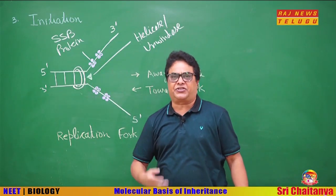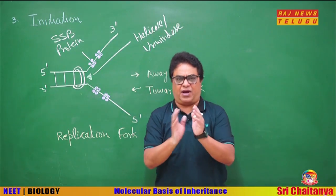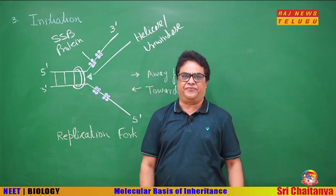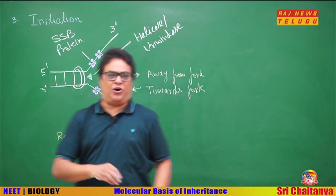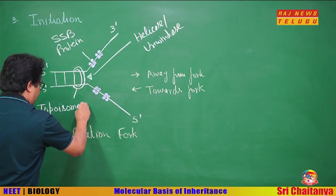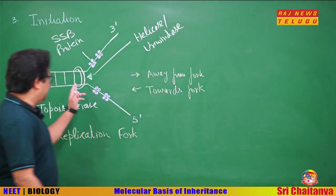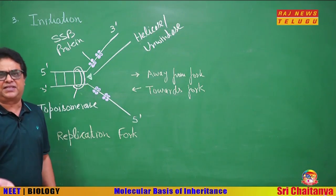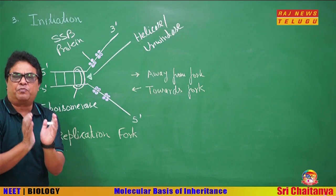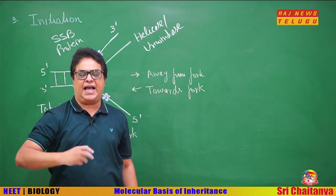This uncoiling of DNA in a small area creates a super-helix coiling tension ahead of the replication fork. This tension is released with the help of another enzyme called topoisomerase, which has nicking and joining activity — it cuts and rejoins the DNA strand. There are two types: one makes single-strand cuts, the other makes double-strand cuts. It cuts the DNA so that the DNA swivels and the super-helix coiling tension is released, then rejoins the strands.